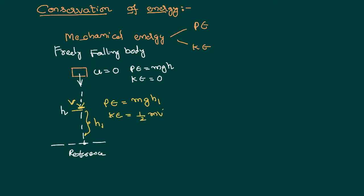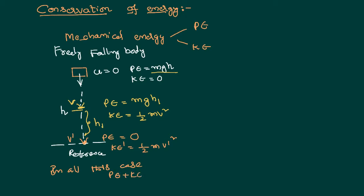What is that kinetic energy? Half mv squared. This potential energy and kinetic energy together will have a sum equal to the initial potential energy of the system. For example, if it has reached the bottom, with reference to the reference point, it is not at all having any height. Therefore, its new potential energy is equal to zero, but it will acquire a new kinetic energy such that all the potential energy is converted into kinetic energy. In all these cases, the sum of potential energy and kinetic energy is equal to a constant.